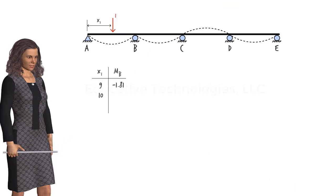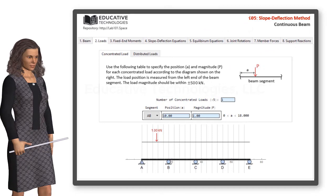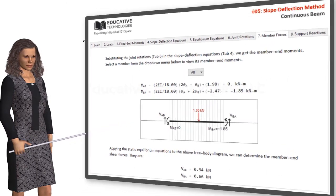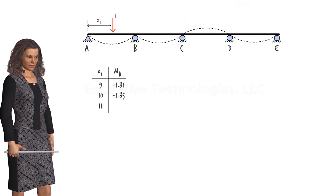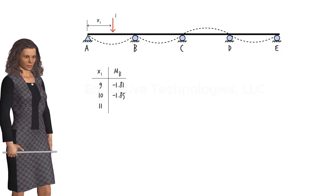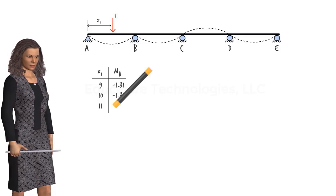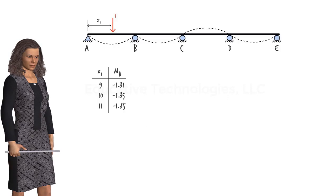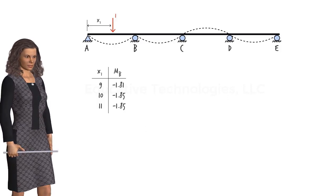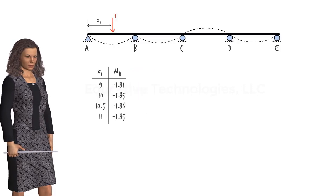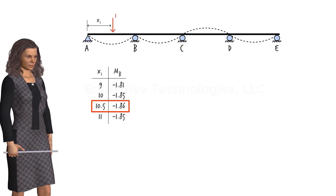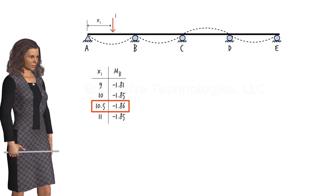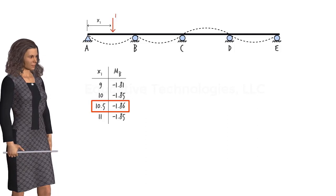Now, let's move the load 1 meter to the right and determine the resulting bending moment at B. The moment when the unit load is placed 10 meters to the right of A is negative 1.85. Again, increment the load position by 1 meter and calculate the resulting moment. The moment value at B when the load is located 11 meters to the right of A is negative 1.85. These values suggest that moment at B reaches its maximum negative value when the load is between 10 and 11 meters to the right of point A. Not surprisingly, if we evaluate the moment at x equals 10.5, we get negative 1.86. Let's assume this is a close enough approximation for the peak moment value. Therefore, we can conclude that when a unit load is placed 10.5 meters to the right of A, bending moment at B due to the load reaches its maximum negative value.